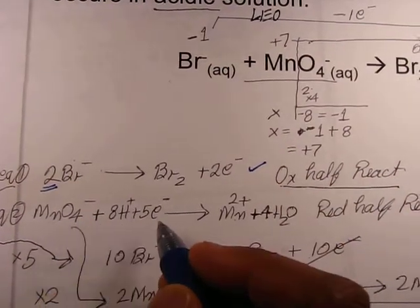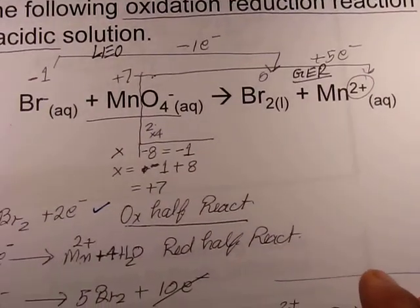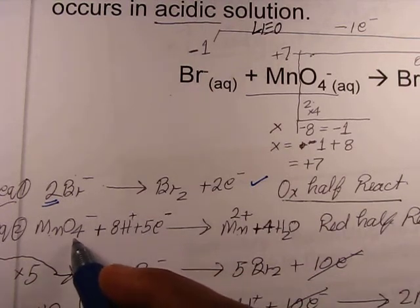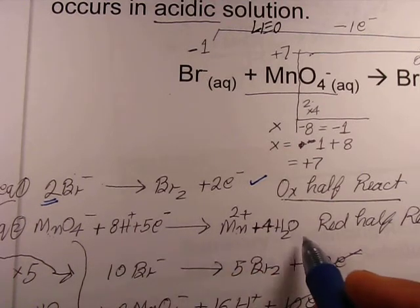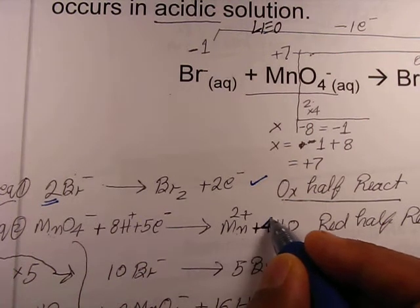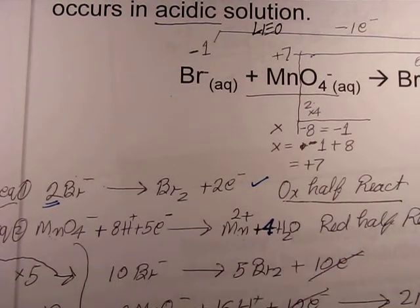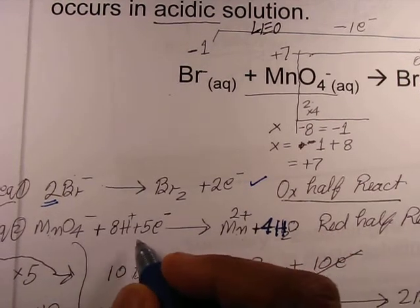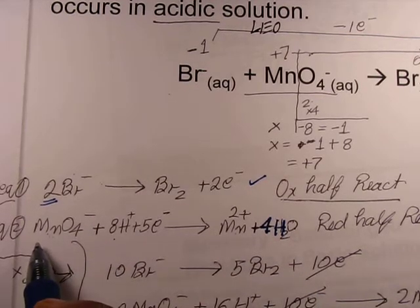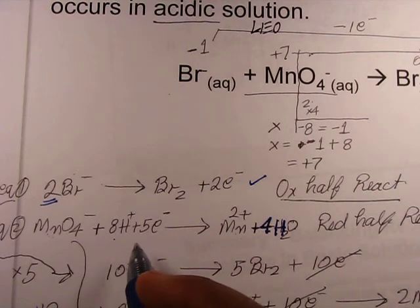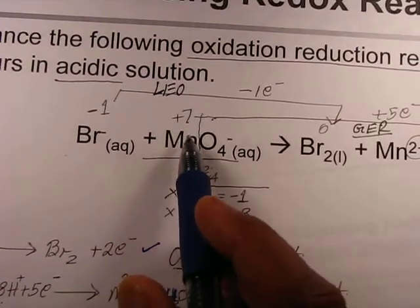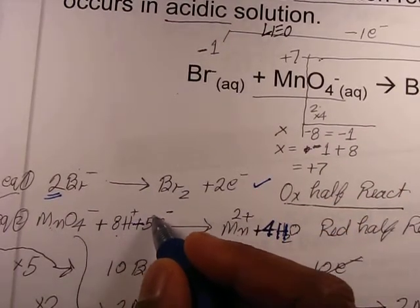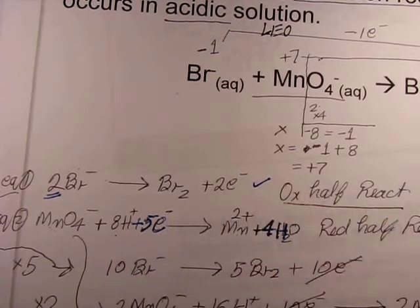For the reduction half reaction, the permanganate ion is converting into the manganese ion. We have manganese balanced one-to-one. There is no oxygen on the product side, so I added four water molecules on the product side — oxygen is balanced. Then four times two equals eight hydrogen ions added on the reactant side — hydrogen is balanced. Now we find the number of electrons: manganese goes from plus seven to plus two, so five electrons are added on the reactant side: MnO₄⁻ + 8H⁺ + 5e⁻ → Mn²⁺ + 4H₂O.